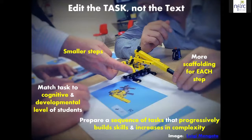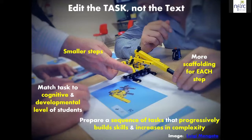I want to edit the task and not the text. So I can do that by giving learners smaller steps, providing more scaffolding for each of the steps, preparing a sequence of tasks that progressively build skills and increase in complexity, and matching the task to the level of my students.